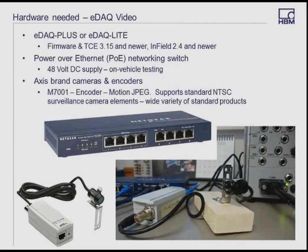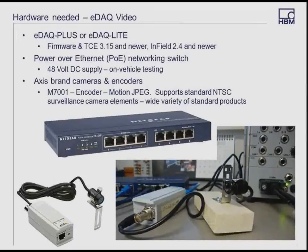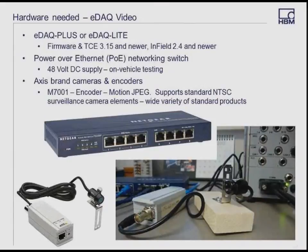If this webinar gives you ideas of how you might want to incorporate video into your testing, I encourage you to contact your HBM sales engineer so we can set up an on-site demonstration and discuss additional options coming available. For reference, the M7001 encoder box only is around $280 US, and the IP67 camera element — which is part of the surveillance kit — brings the total to around $420. The IP67 is a fairly rugged camera element.